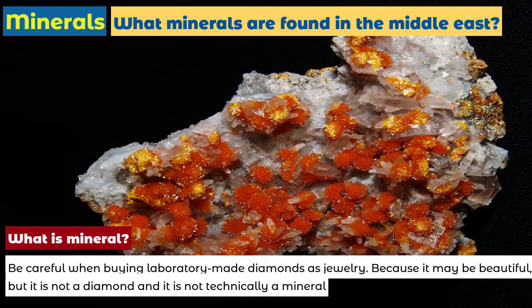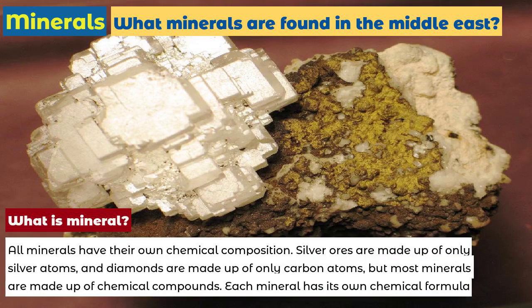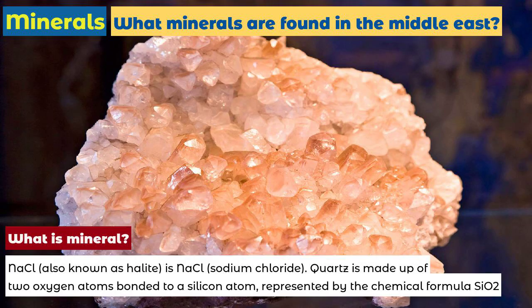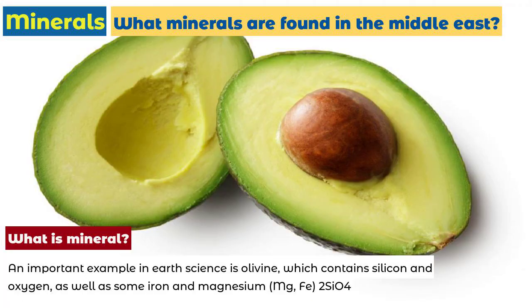Almost all of the Earth's crust — 98.5% — is made up of eight elements: oxygen, silicon, aluminum, iron, calcium, sodium, potassium, and magnesium. These are the elements that make up the largest amount of minerals. All minerals have their own chemical composition. Silver ores are made up of only silver atoms, and diamonds are made up of only carbon atoms, but most minerals are made up of chemical compounds. Each mineral has its own chemical formula. Halite is NaCl, sodium chloride. Quartz is made up of two oxygen atoms bonded to a silicon atom, represented by the chemical formula SiO₂. In nature, things are seldom as simple as inside the laboratory, so some minerals contain a wide range of chemical compounds. An important example in Earth science is olivine, which contains silicon and oxygen, as well as some iron and magnesium, represented as (Mg,Fe)₂SiO₄.